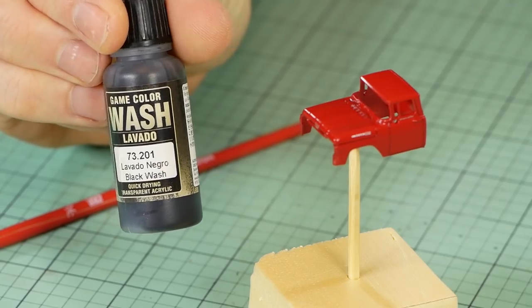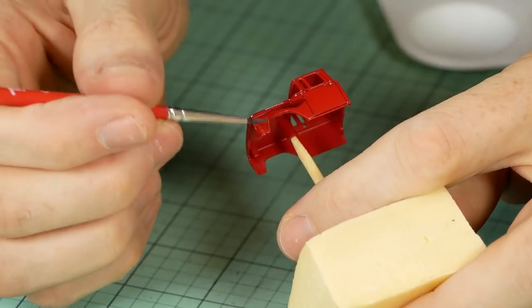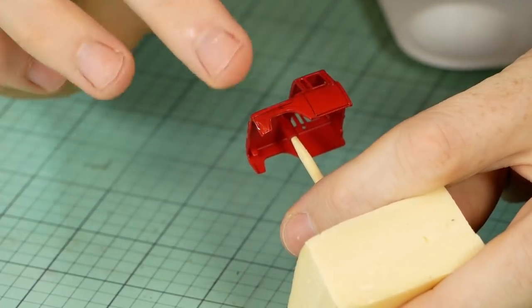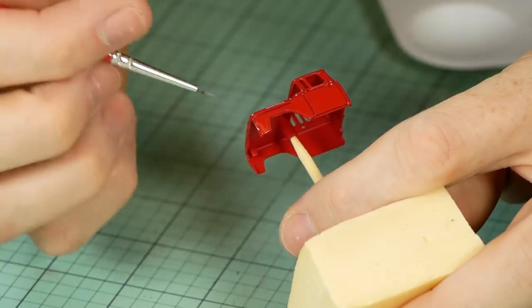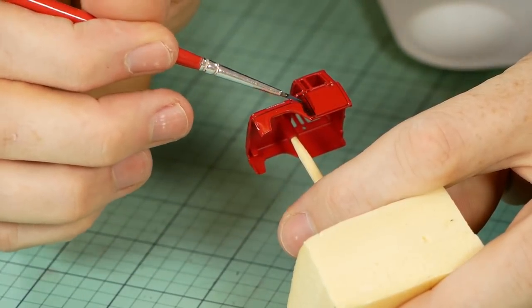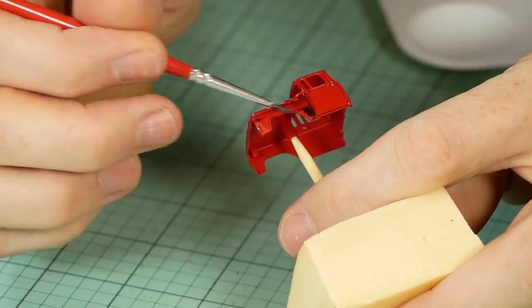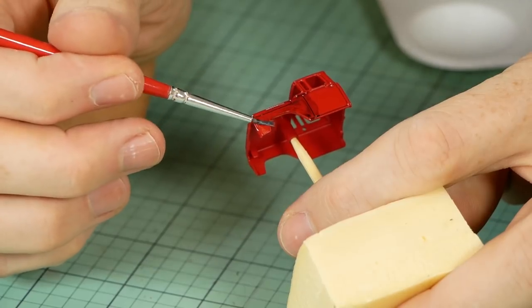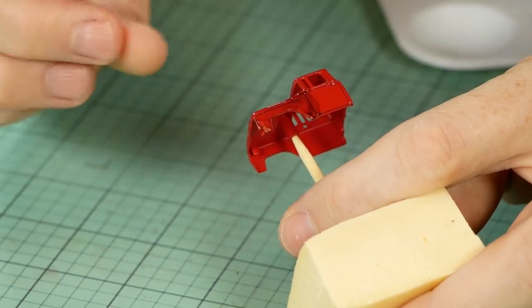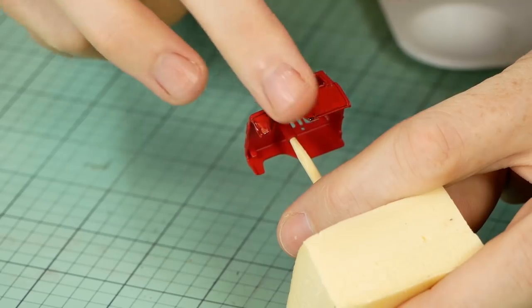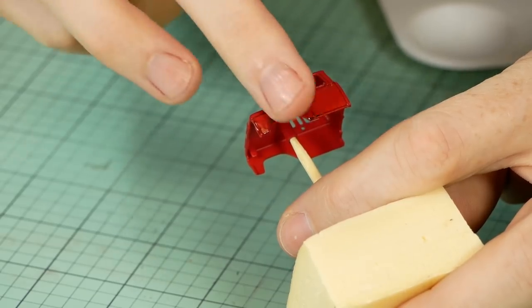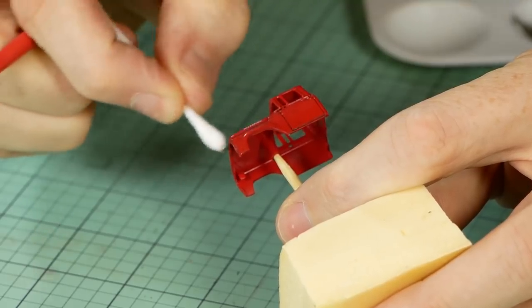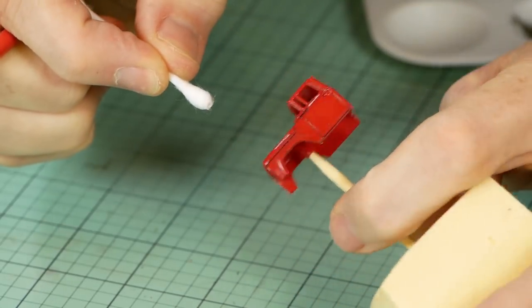To add the grime I use a fast drying Vallejo black wash. Basically working on one panel at a time, I cover the panel with the wash and lightly remove it again with my finger. Each time I do this a small amount of the wash is left behind as it dries. I repeat the process over and over until it has the grimy appearance I'm after. It's a trial and error process. If you make a mistake you can use a moist Q-tip to remove the wash and then try again.